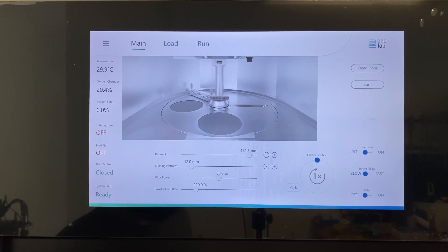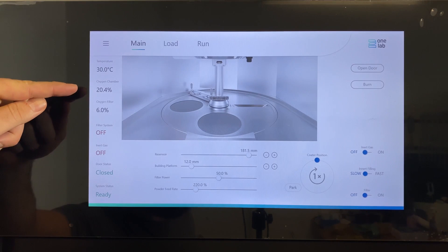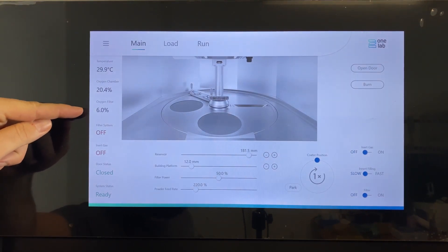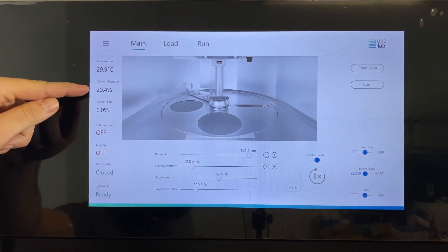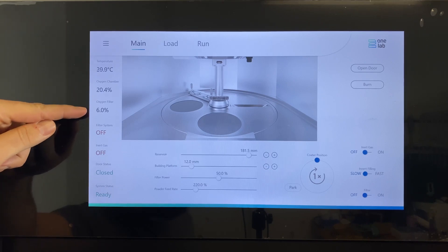Before we can start our printing process, we need to fill our building chamber and our filtration system with inert gas. In this case, nitrogen. Here we have two oxygen sensors, one for the chamber and one for the filter. The chamber must be below 1% and the oxygen in the filter must be below 2%, otherwise we cannot start the print.